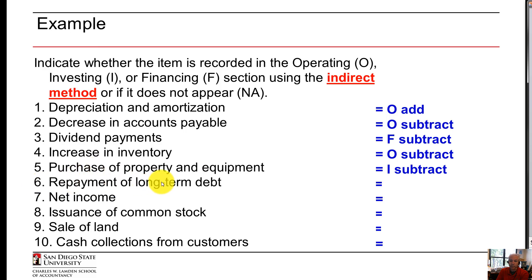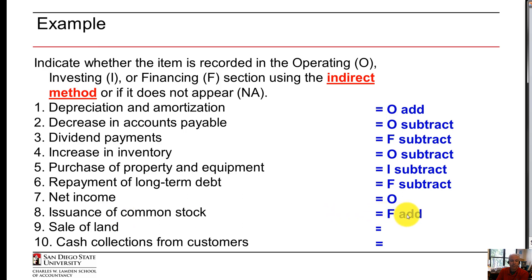Repayment of long-term debt is financing — repay is a subtraction. Net income is the very top of the statement of cash flows, the first line listed in the operating section. If we issue new common stock, it's financing and added — it's an inflow. If we sold some land, it would be in the investing section as a long-term asset — we would add it in because we sold it, making it a cash inflow.